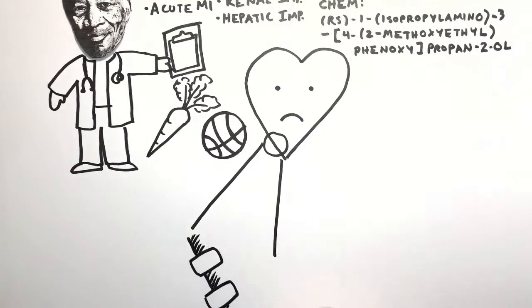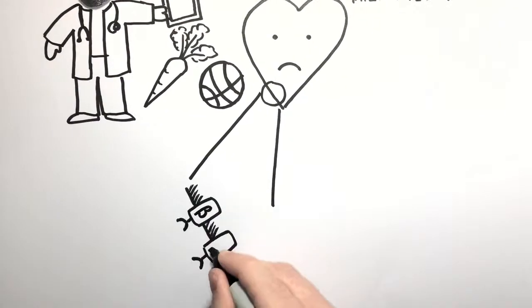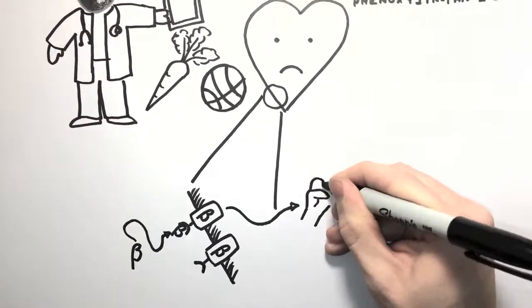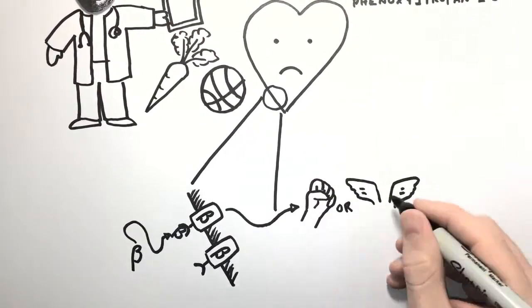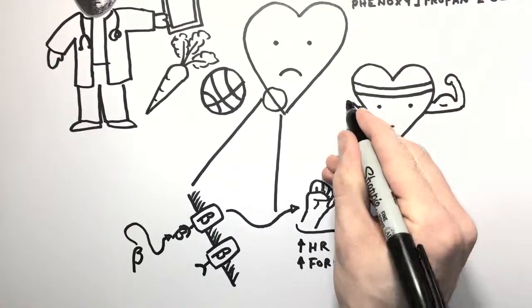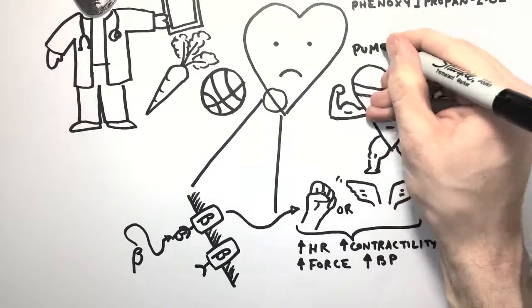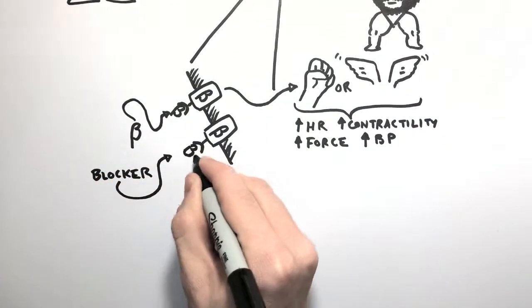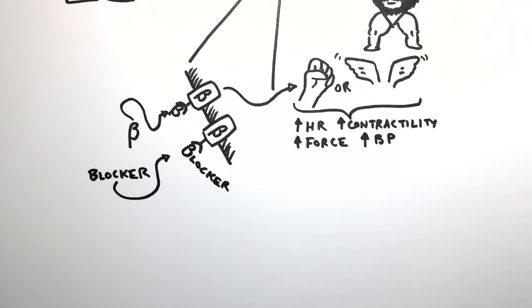Metoprolol is a selective beta-1 adrenergic receptor antagonist. Beta receptor stimulation leads to an adrenergic response. When beta receptors on the heart are stimulated, the heart increases in force and heart rate, increasing blood pressure, leading to many of the symptoms you may be experiencing. Metoprolol has been designed to directly block these receptors from being stimulated.